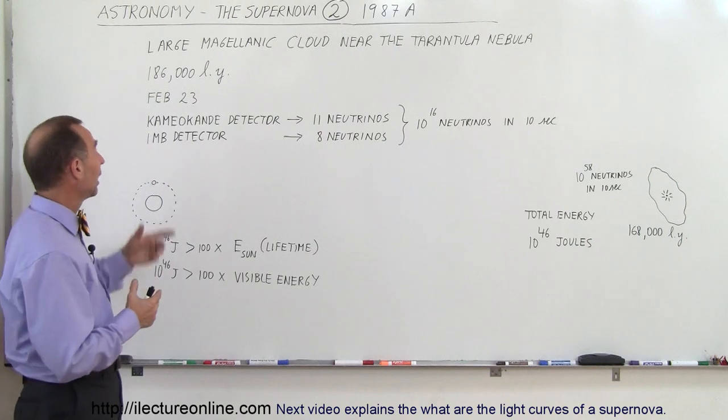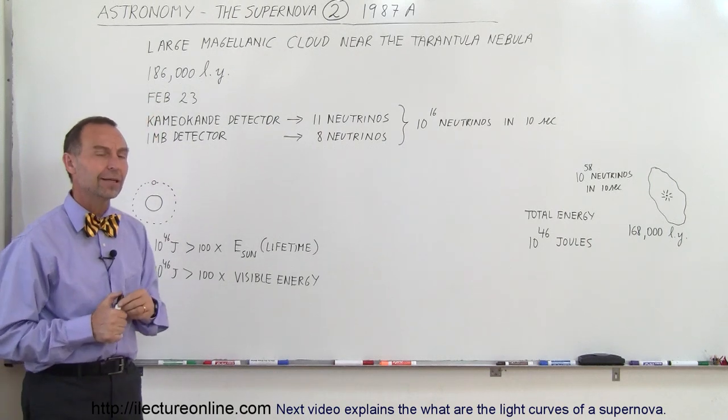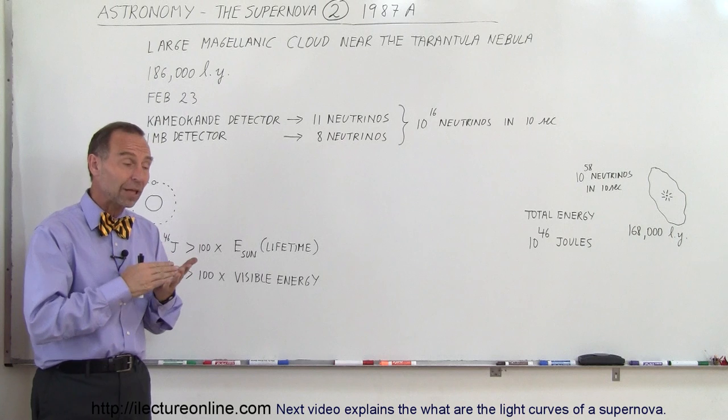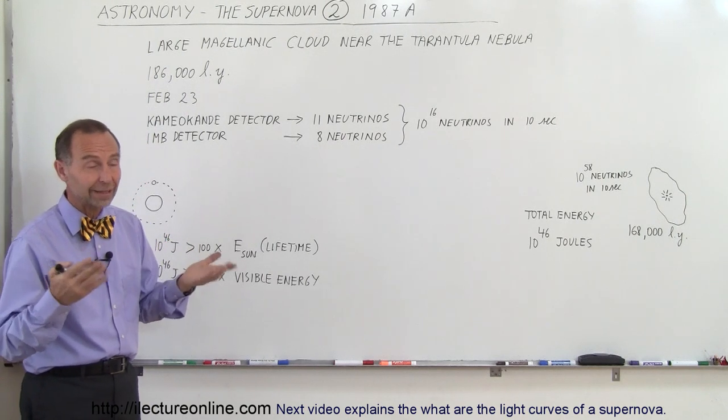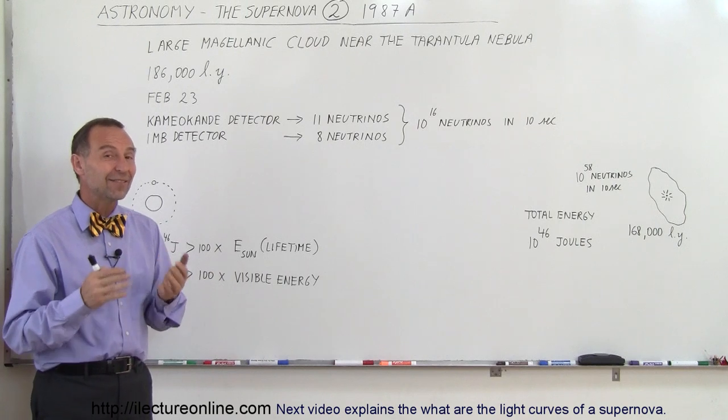A supernova occurred on February 23rd of that year. Prior to that, the last supernova that we had seen, or at least recorded using telescopes, was back in the 17th century.